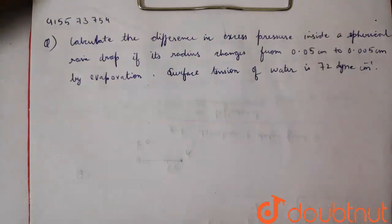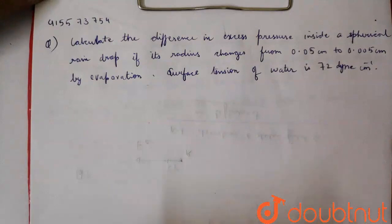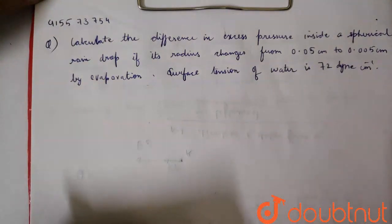Welcome guys, let us solve this question. Question says, calculate the difference in excess pressure inside a spherical rain drop if its radius changes from 0.05 cm to 0.005 cm by evaporation. Surface tension of water is 72 dyne per centimeter.